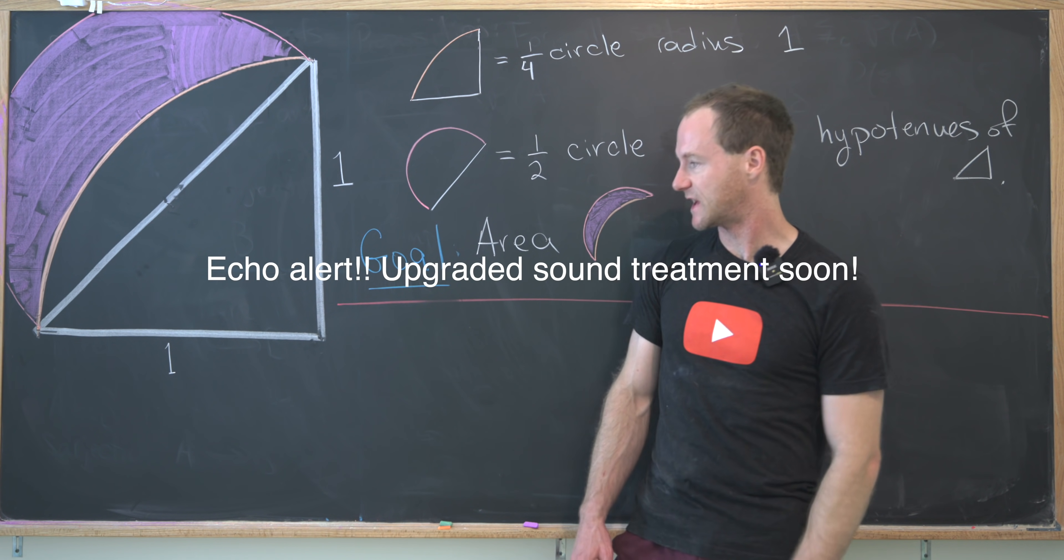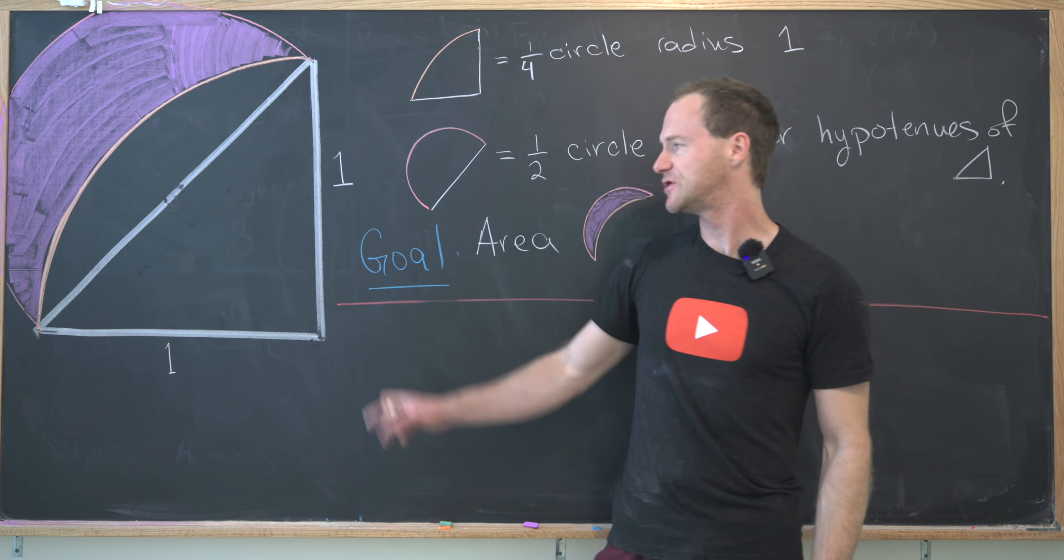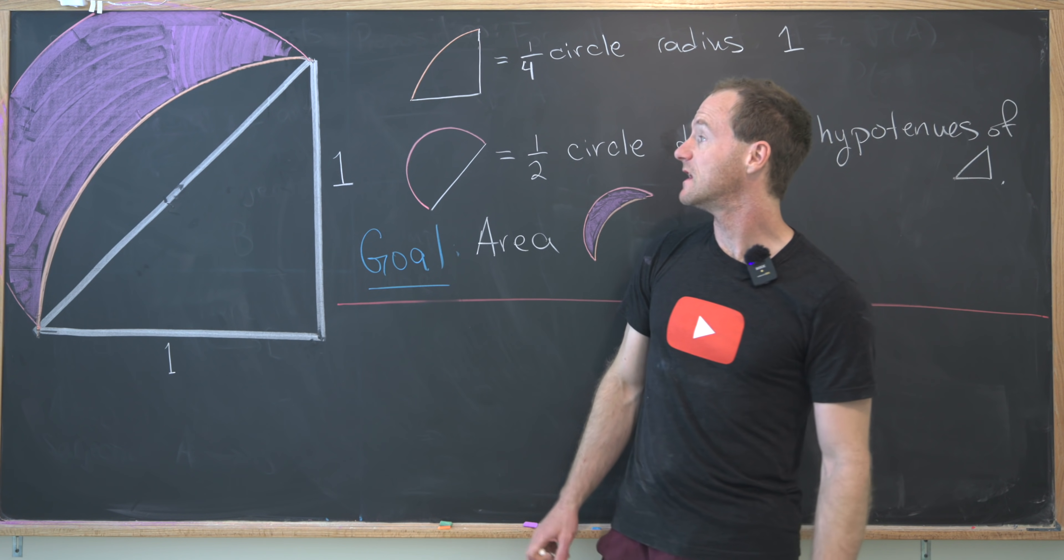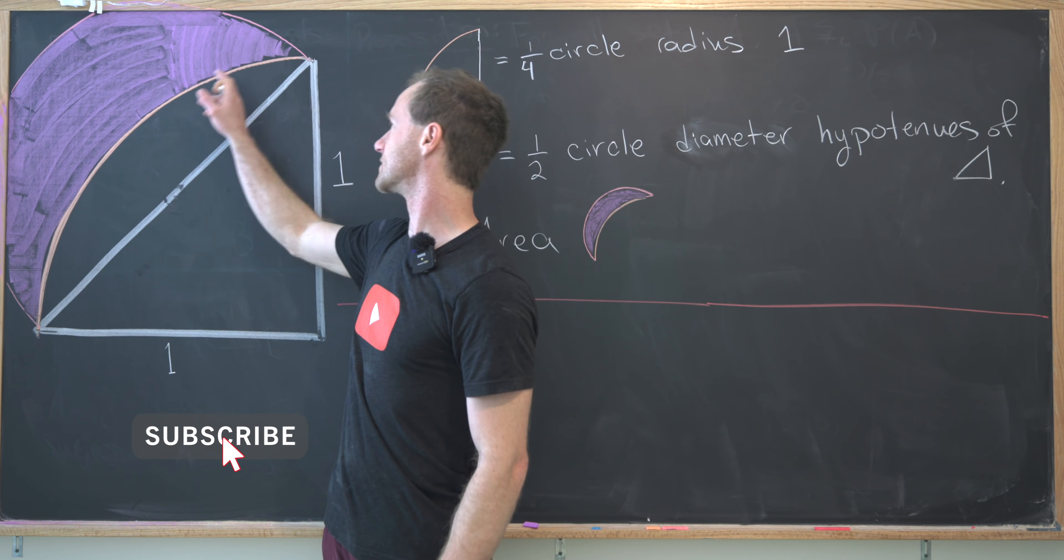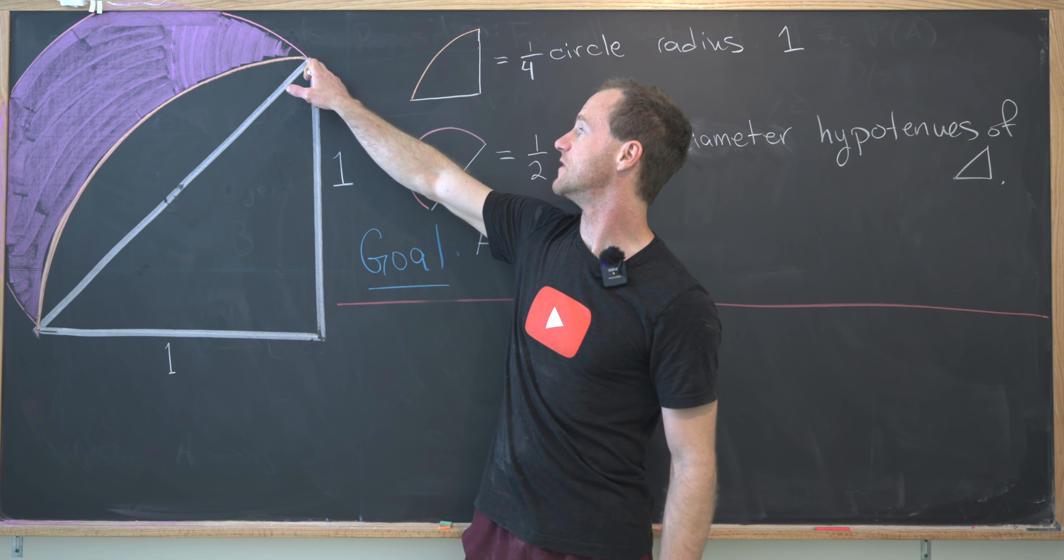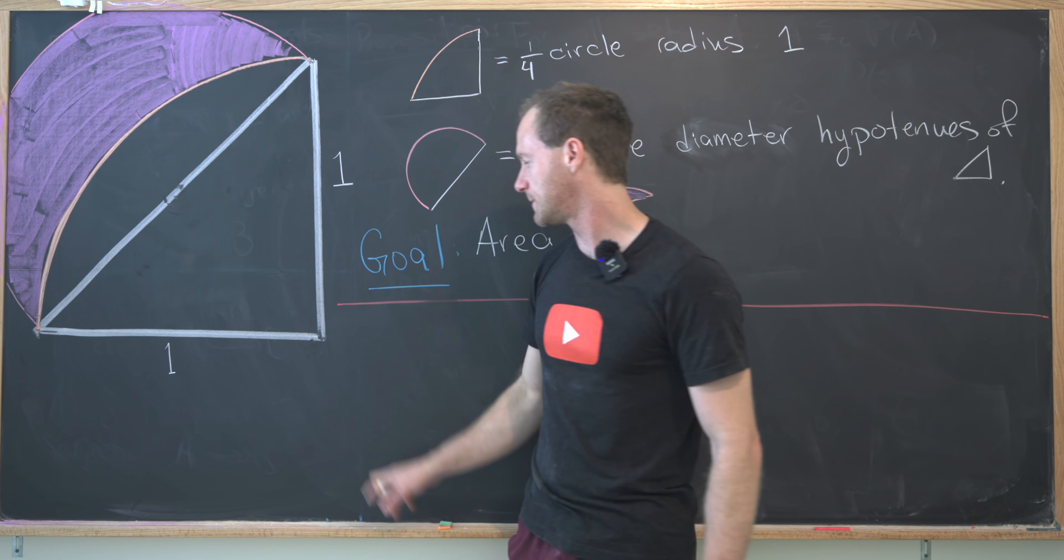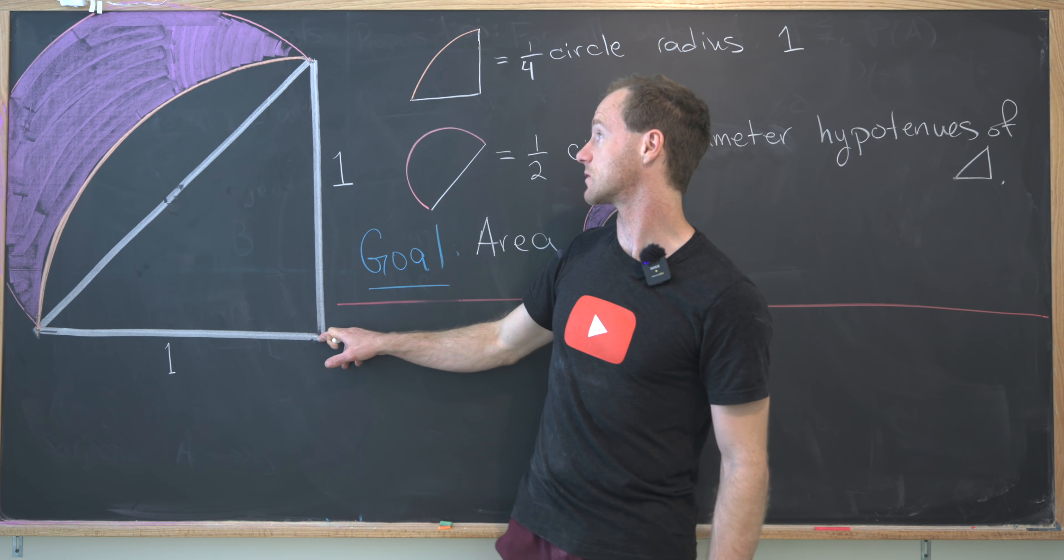So what is our setup? We've got an isosceles right triangle where I've just given it unit height and unit base. And then we've got a circle of radius one, or really a quarter of a circle of radius one, defined going through this vertex of the triangle and this vertex of the triangle that makes this vertex of the triangle the center of this circle.